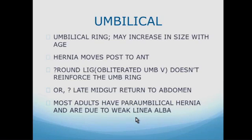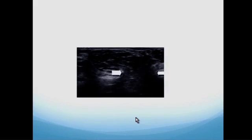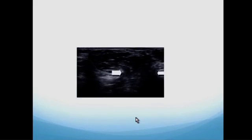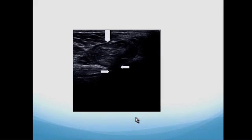Umbilical hernias occur at the umbilical ring and may increase in size with age, moving posterior to anterior. They may occur because the round ligament or obliterated umbilical vein doesn't reinforce the umbilical ring adequately, or because of late mid-gut return to the abdomen. Most adults have a paraumbilical hernia due to a weak linea alba, so the hernia does not come directly from behind the umbilicus. You need to repair umbilical hernias because of their tendency to strangulate. Imaging examples show a non-reducing fat-containing umbilical hernia with a visible neck, and another with a very narrow neck and wider sac, also non-reducible.